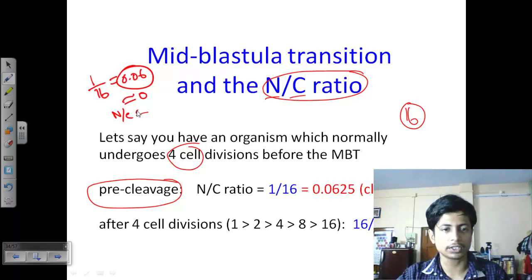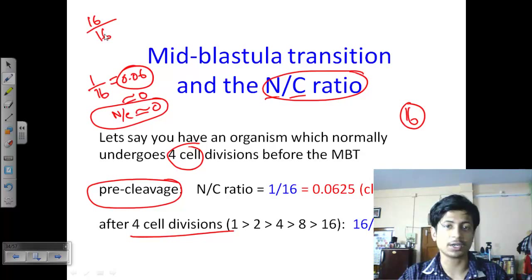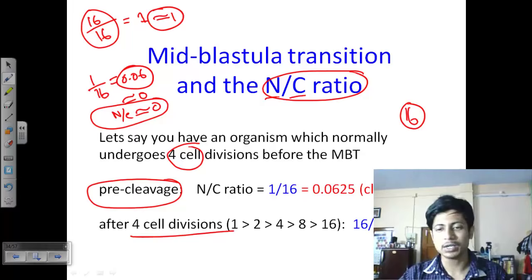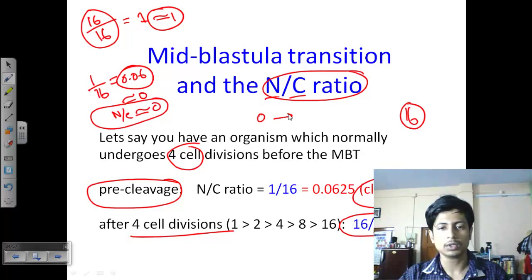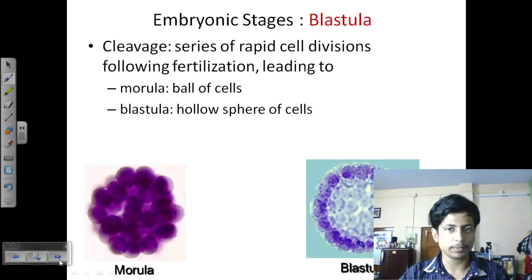In contrast, at gastrulation, after four cell divisions the number of nuclei becomes sixteen and the number of cells is also sixteen, so the ratio becomes close to one. The nucleus-to-cytoplasm ratio shifts from close to zero at pre-cleavage to close to one after the mid-blastula transition. This ratio is what determines whether the mid-blastula transition will occur or not.